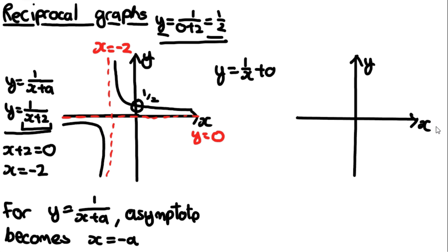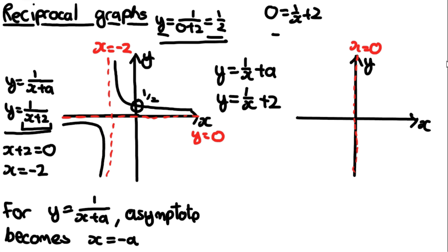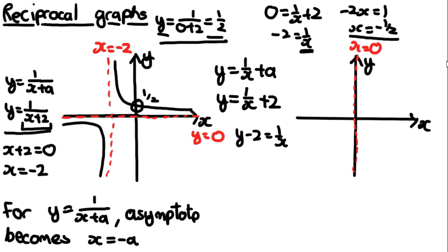They could also ask about the form y = 1/x + a, where the constant is outside the denominator. For example, y = 1/x + 2. One asymptote is still x = 0 because x is still in the denominator. However, y can now equal 0 — you can find a value where y = 0 — so the graph will meet that line, meaning y = 0 is no longer an asymptote. Rearranging: y - 2 = 1/x, and since (y - 2) cannot equal 0, the new asymptote is y = 2.